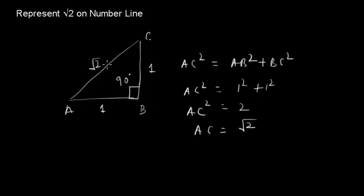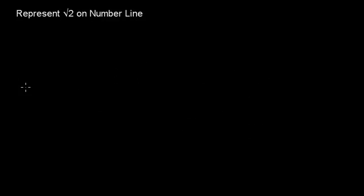So using this theorem, we can locate root 2 on number line. Come to the number line. Let's say this is 0, this point is 1, this point is 2. We will create one triangle on point 1.